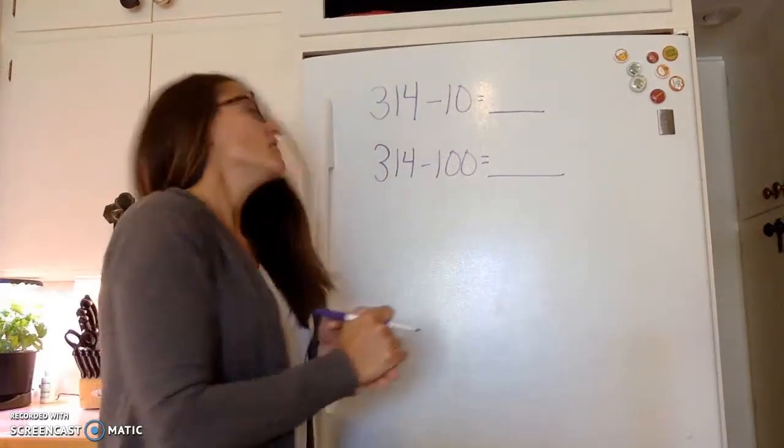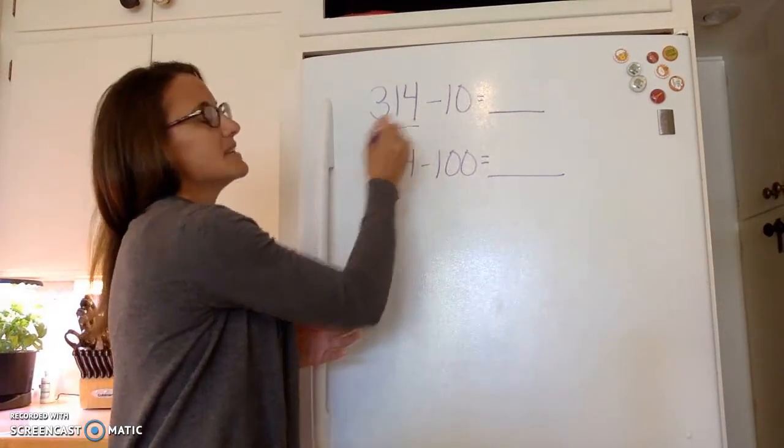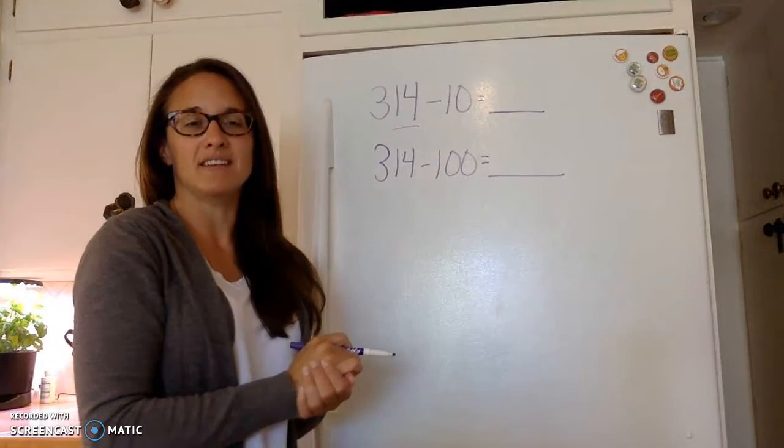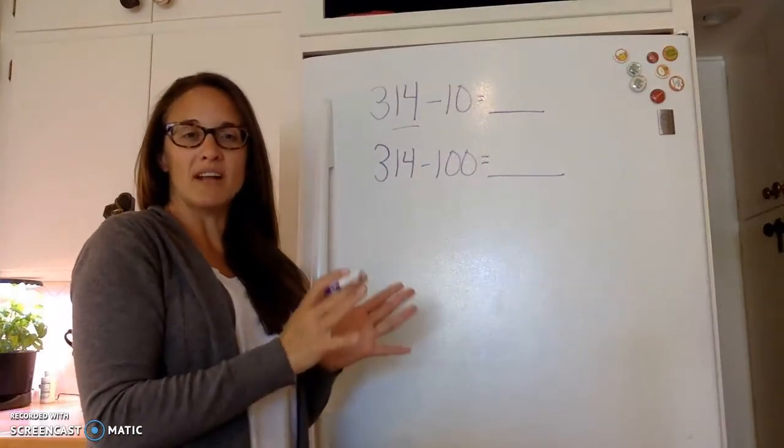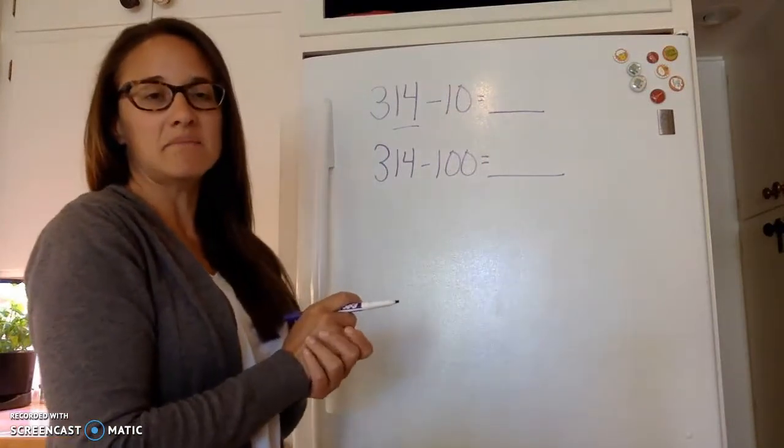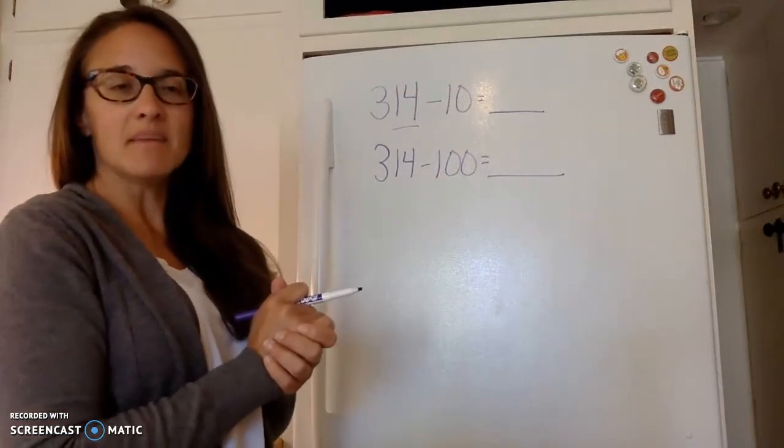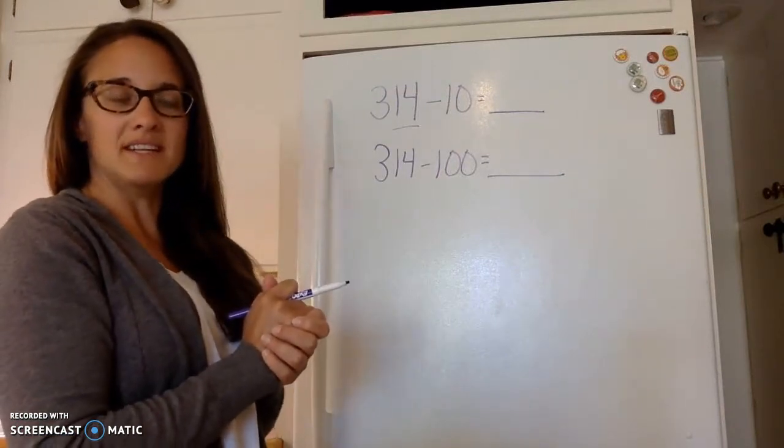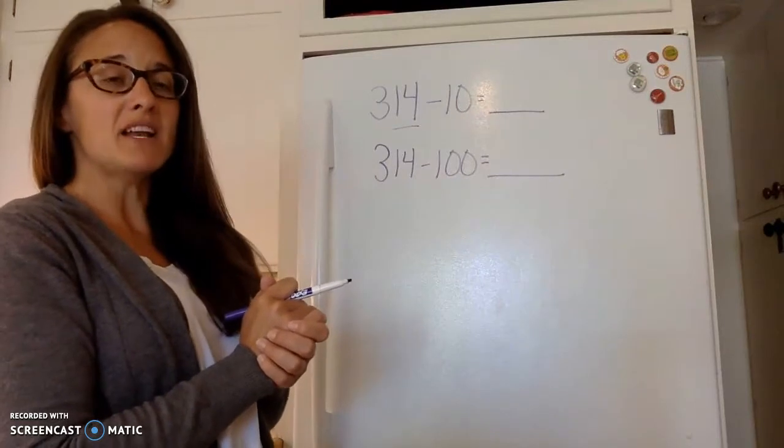314 minus 10. Remember these teenagers are sometimes our hardest numbers, 14, to think about what comes before and after those. So 314 minus 10, think about what numbers are before the teenagers. If you need to you might even count up.